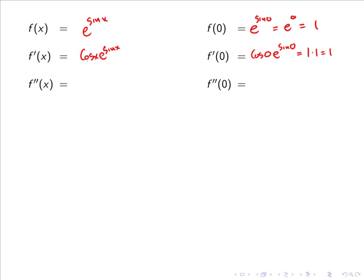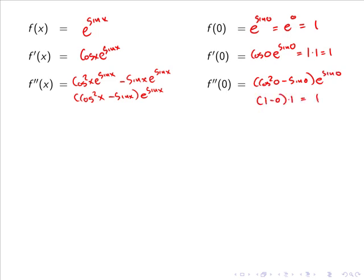Now if we calculate the second derivative using both the chain and product rule we have cos of x by the derivative of e to the sine x, so cos squared x e to the sine x plus the derivative of cos x so minus sine x times e to the sine x. We can tidy this up as cos squared x minus sine x by e to the sine x. And if we evaluate this derivative at 0 we have cos squared 0 minus sine 0 by e to the sine 0, so 1 minus 0 by 1 which again gives us 1.